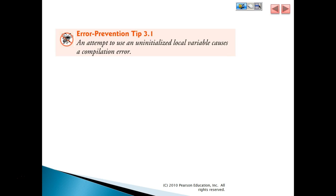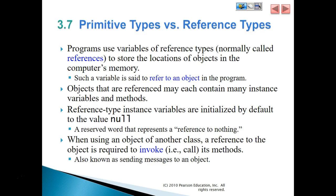An attempt to use an uninitialized local variable causes a compilation error. Programs use variables of reference types — normally called references — to store the location of objects in computer memory. Such a variable is said to refer to an object in the program. This would be like pointers in the C or C++ language. Objects that are referenced may each contain many instance variables and methods. Reference type instance variables are initialized by default to the value null, a reserved word that represents a reference to nothing. When using an object of another class, a reference to the object is required to invoke or call its methods, also known as sending a message to an object.